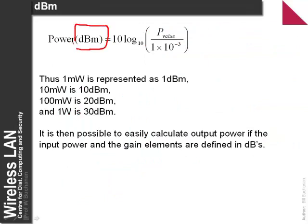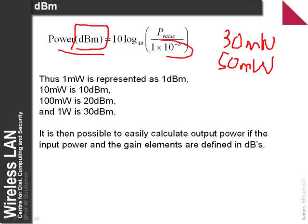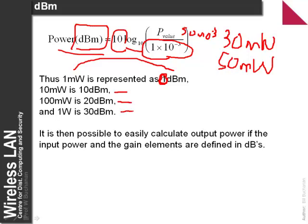Another key term is power-related dBm. Most powers we deal with are much less than 1 watt — typically 30 mW or 50 mW maximum. We calculate power as its ratio to 1 mW, take log base 10, and multiply by 10. So 1 mW is 0 dBm, 10 mW is 10 dBm, 100 mW is 20 dBm, and 1 W is 30 dBm.